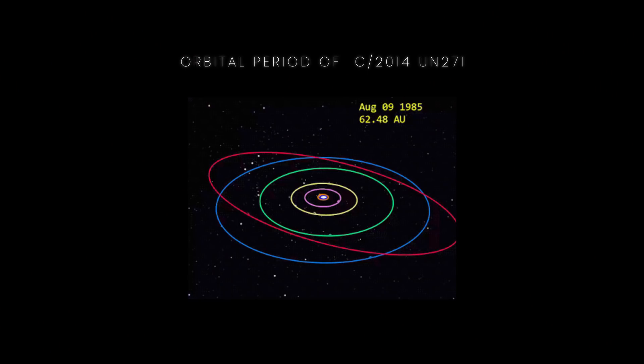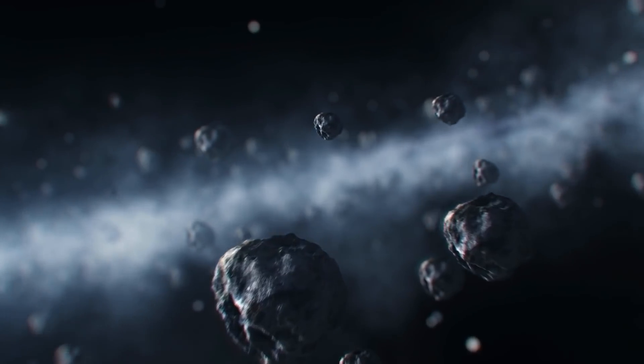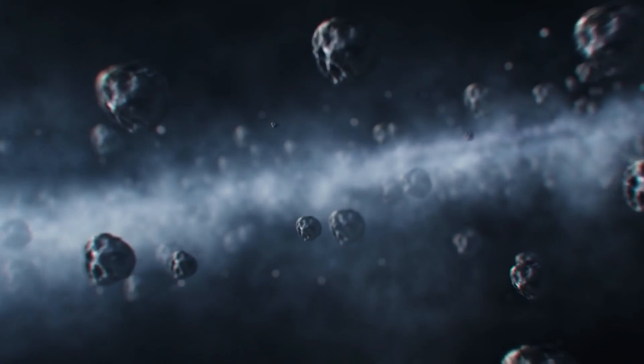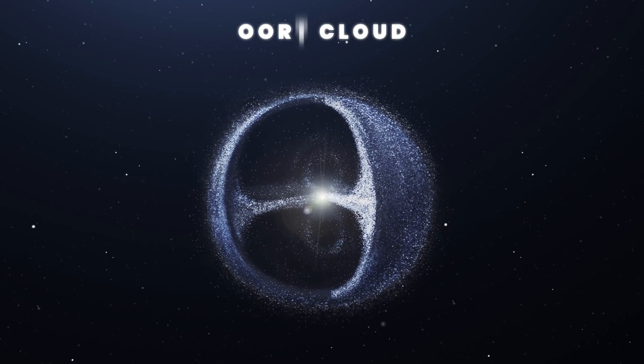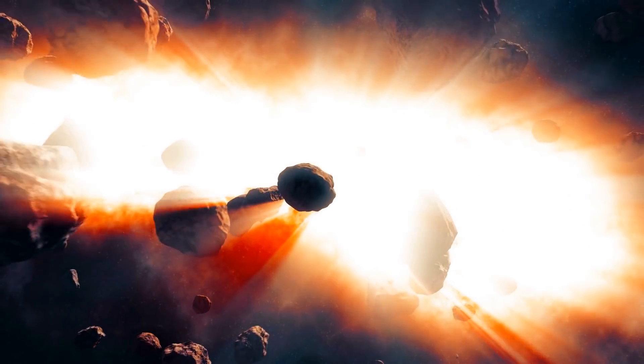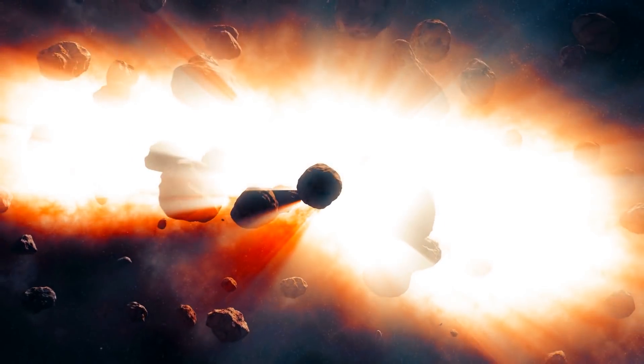Given such a long orbital period, it seems the comet should have come from a very distant place. And it happens there's just such a place, believed to be home to trillions of comets. It's a place called Oort Cloud, a spherically shaped region of space containing various remnants from the early ages of our solar system.